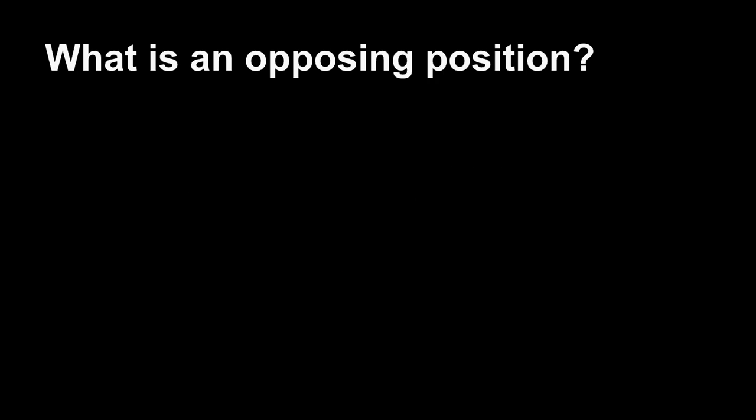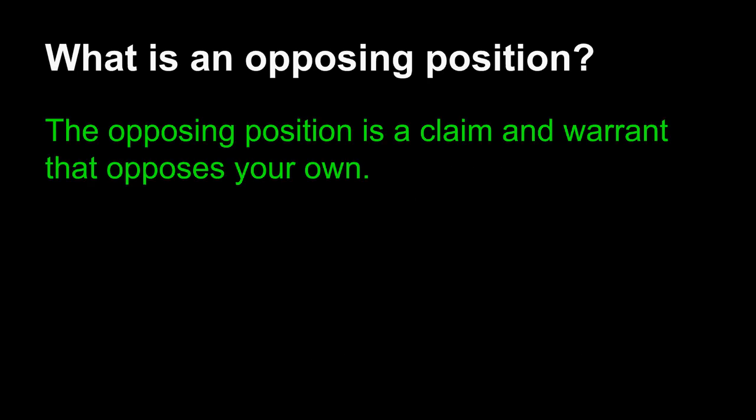What is an opposing position? The opposing position is a claim and warrant that opposes your own. Notice that I've used the same words we've talked about before: claim and warrant. This means that the opposing position begins with two sentences, each of which are familiar to us.